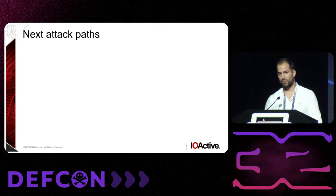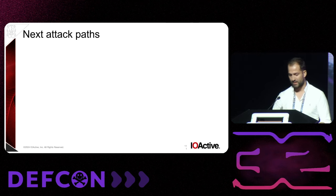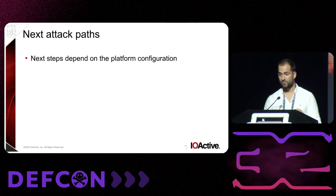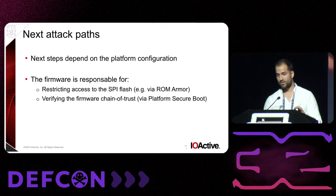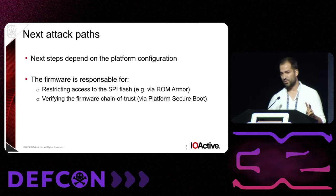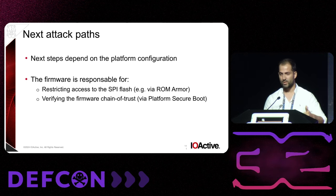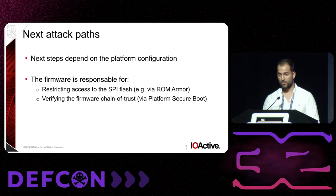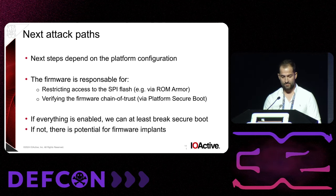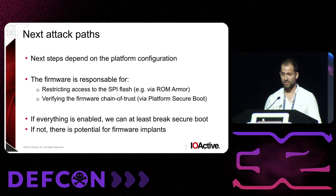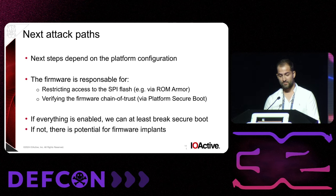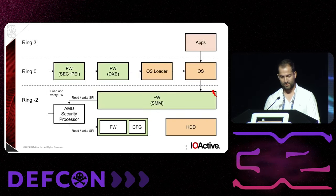Let's take a more systematic approach to see whether this works on all systems or just some. The attack paths depend on how the platform is actually configured. Every vendor configures certain AMD-provided features. Two of them are key: one is ROM armor, which can restrict access to portions of the SPI flash; and the second is platform secure boot, which is AMD's equivalent of Boot Guard and verifies the initial stages of firmware code. If everything is enabled, the very least we can do is write to the portion of the SPI flash where UEFI variables live — things like the secure boot keys — so we can break secure boot. But if nothing is enabled, we have firmware implants.